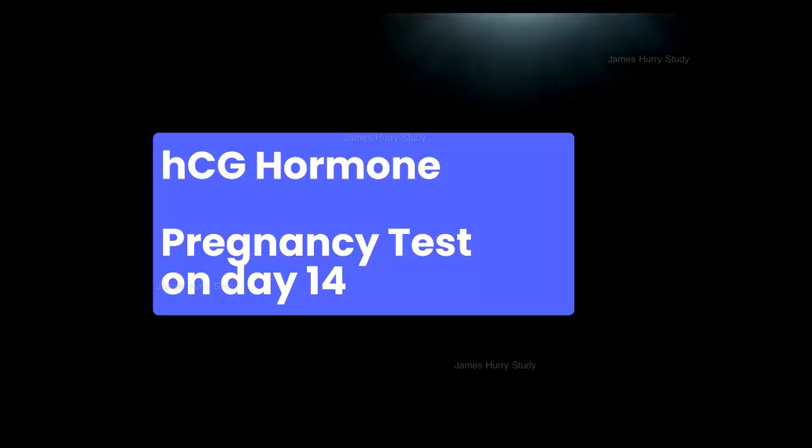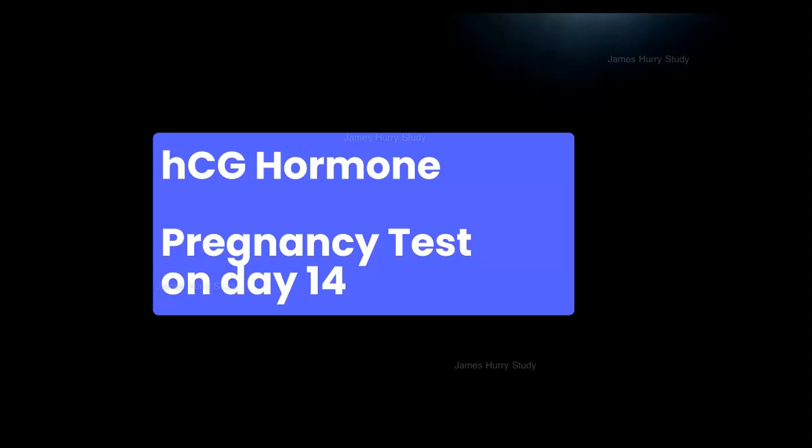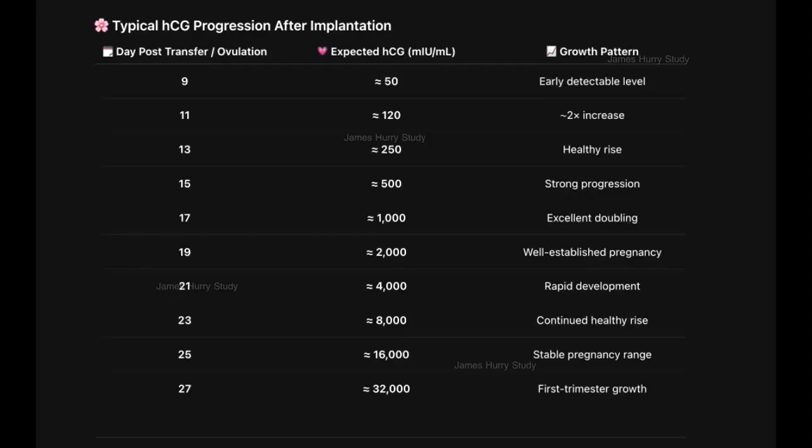Two weeks after the embryo transfer, a pregnancy test is performed to determine the result. The pregnancy hormone, human chorionic gonadotropin (HCG), is typically measured through a blood test. Normally, an HCG level above 100 MIU-ML on day 14 is considered indicative of a positive pregnancy, and the level is expected to double approximately every 48 hours during early pregnancy.